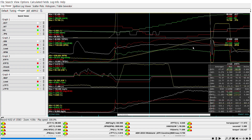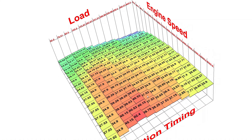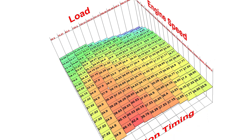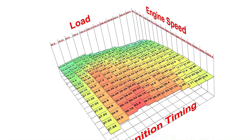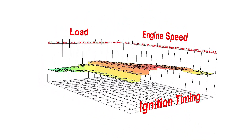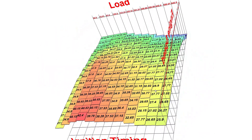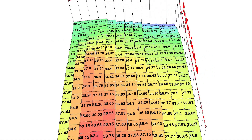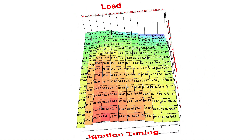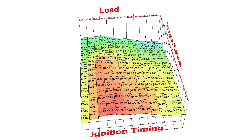Raise the degree of advance on those cells gradually until knock is recorded, and then back off a degree or so for safety precautions. From experience, it is safe to advance the cells in those areas gradually up to 6 degrees at high RPM and low load. However, for this, premium fuel with a high octane rating is required.